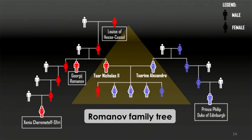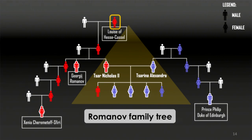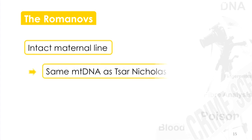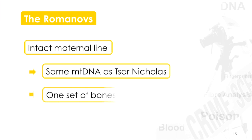Let's look at the imperial family. The father, Tsar Nicholas II — some of his relatives survived the revolution and escaped from Russia. We can trace back the Tsar to his mother and to his grandmother, Louise of Hesse Castle. Louise of Hesse Castle's daughter was the Tsar's mother. The Tsar had a sister, whose daughter had a daughter who had a daughter, giving us an intact maternal line. All the female members of that line pass down the same mitochondrial DNA, and one set of bones — those of an adult male — showed a match, confirming those were the remains of the Tsar.